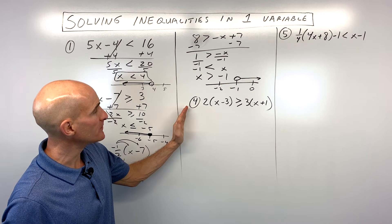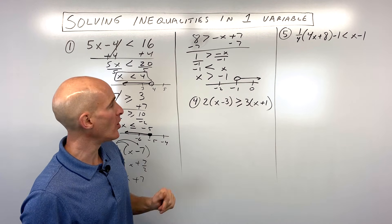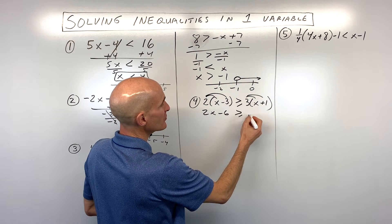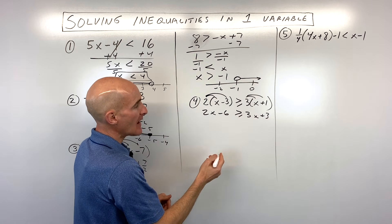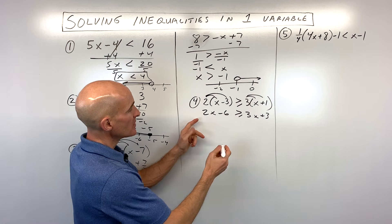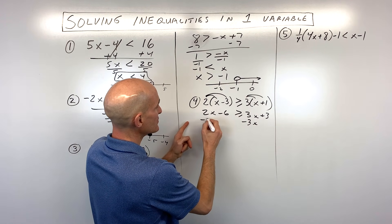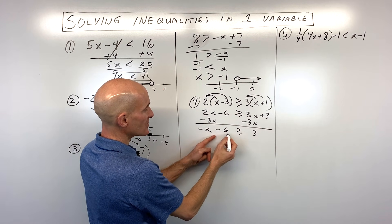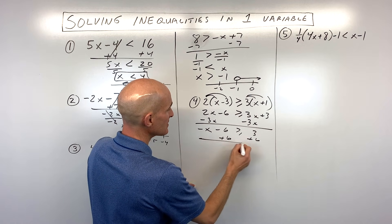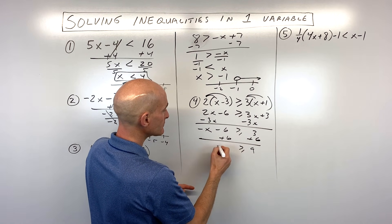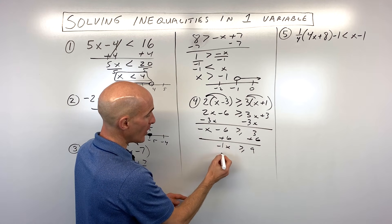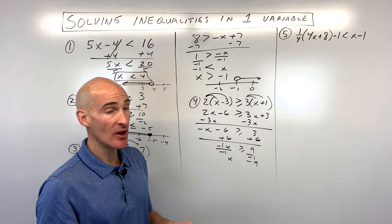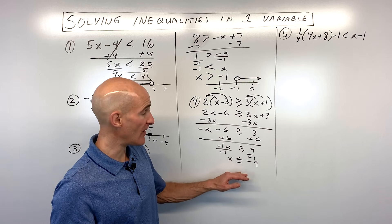Number 4 is a little bit more challenging — we've got variables on both sides of the inequality. I'd start by distributing the 2, so that gives us 2x minus 6. Distribute the 3 — that's 3x plus 3. Now we want to get the variables on one side and numbers on the other, just like solving an equation. I'm going to subtract 3x from both sides, which gives us negative 1x. Then I'm going to add 6 to both sides, so that comes out to 9. We have negative x, which is like negative 1x, so divide both sides by negative 1 — and remember, when you divide by a negative number, that inequality sign changes directions. So we have x is less than or equal to negative 9.